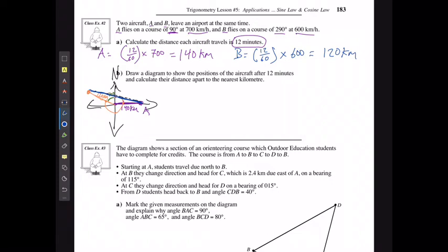If I'm just looking at my triangle, then what do I actually know? I know just for the triangle, I have the side length of A is going to be 140. The side length over here, that was point B, is going to be 120. And the angle in here is going to be a 90 degree angle here and a 70 degree angle here.